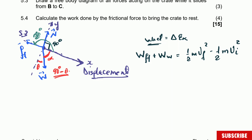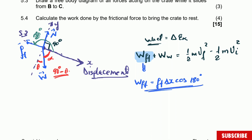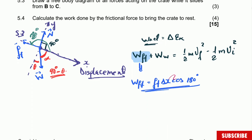The work done by frictional force equals frictional force multiplied by displacement multiplied by cosine of 180 degrees. However, we have a problem: we don't know the displacement. For the work done by weight, there are two options. Option one uses the definition of work: weight times displacement times cosine of the angle. But this gives us two unknowns — displacement and theta. So we need to use option two instead.